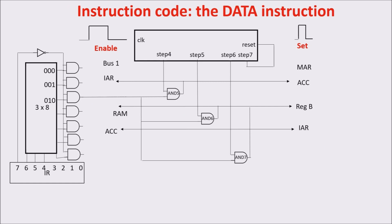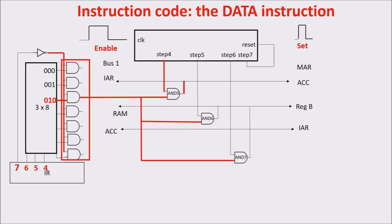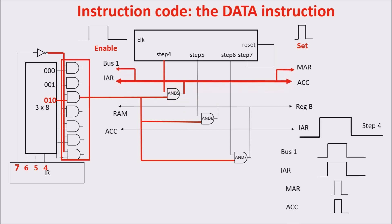Now we see how to execute the data instruction in steps 4, 5, and 6. Here you see the logic circuit we need. Bit 7 of the instruction register is 0, and we enable all the AND gates, thus enabling the NOT ALU instruction section. When bits 4, 5, and 6 are 0, 1, 0, we have the OP code for the data instruction, and the third output of decoder 3-to-8 is ON, putting ON the third AND gate. When step 4 arrives, we put ON the output of AND 5, giving an enable pulse to both bus 1 and IAR.